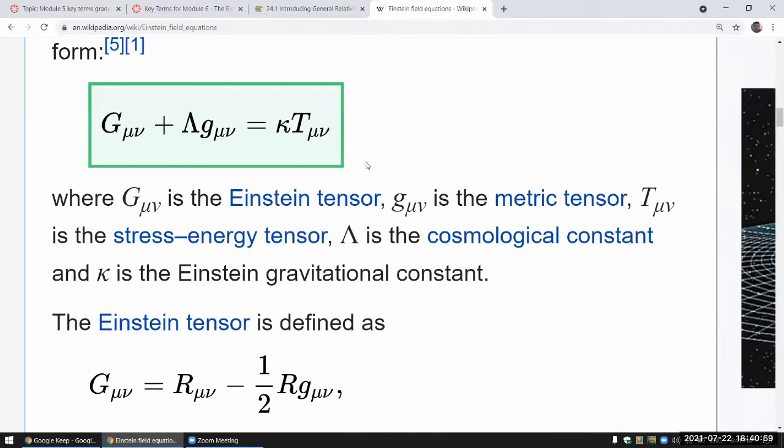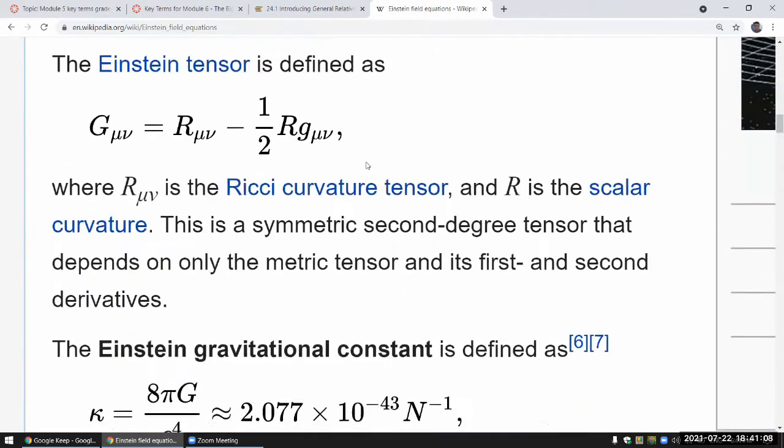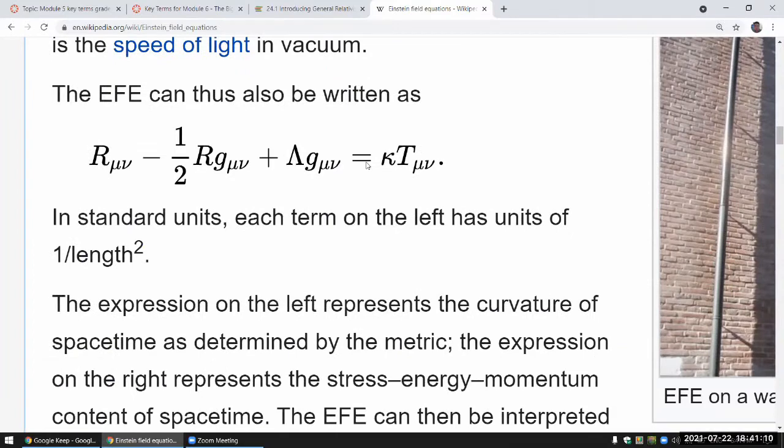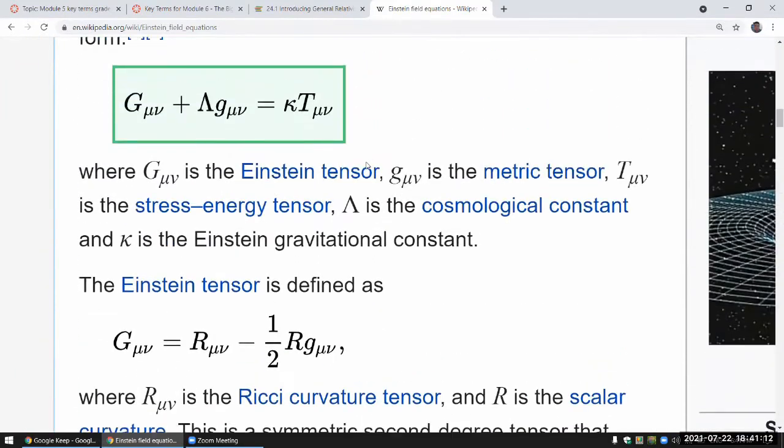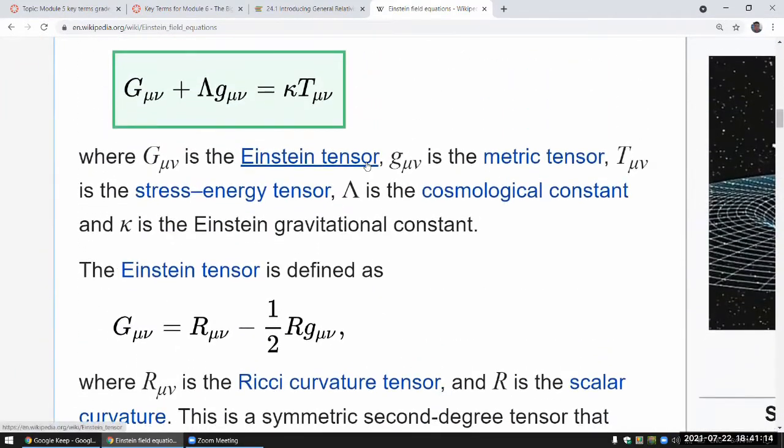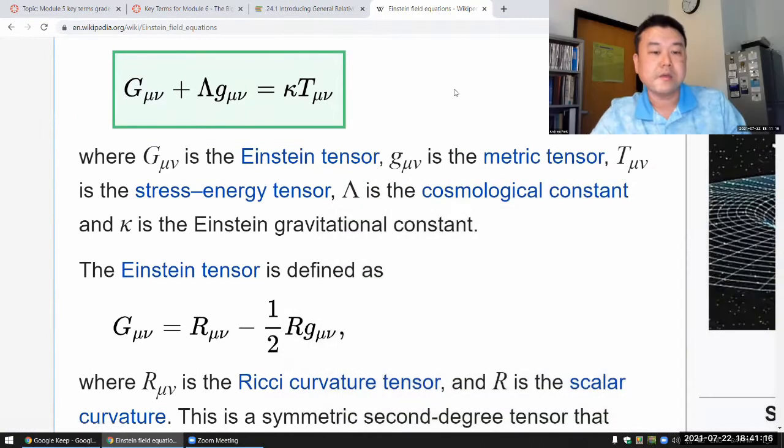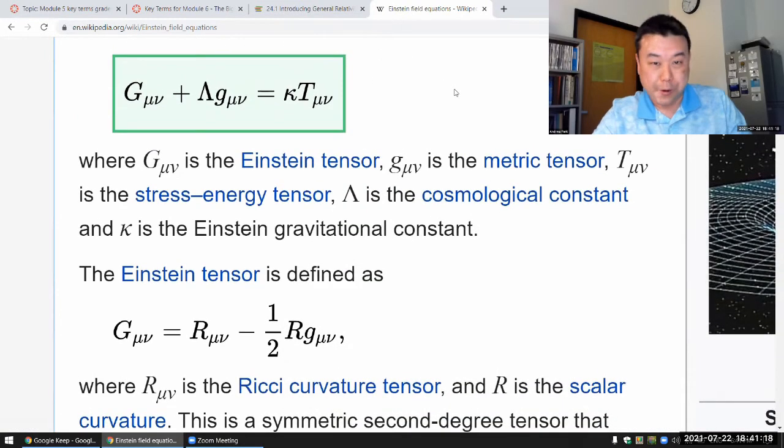But what I can tell you is that Einstein actually could have predicted the expanding universe. So the Einstein equation is quite complicated. So when you work through the notations, this stands for a nonlinear differential equation. And it's much more complicated than the inverse square law you have seen with Newton's universal gravitation.